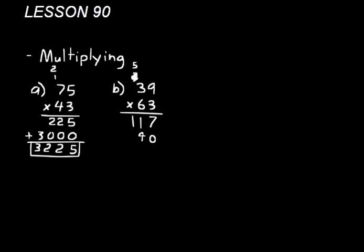6 times 3 is 18. And then add 5 to that. That would be 23. Now we add these two together. 7, 5, 4, 2. 2,457.